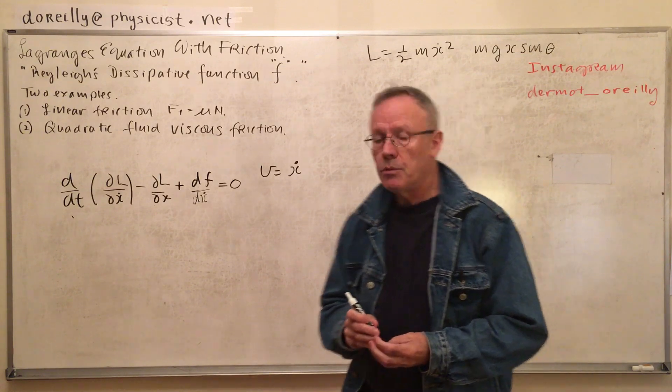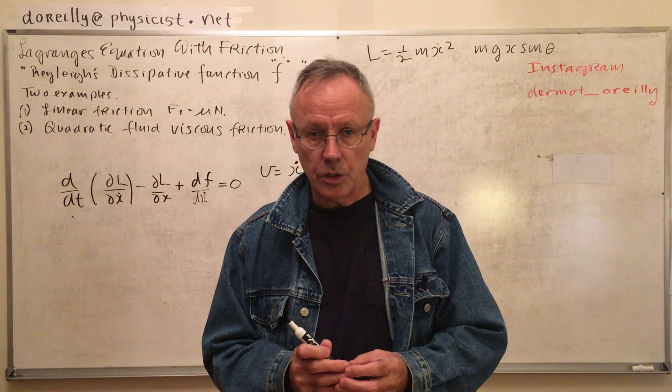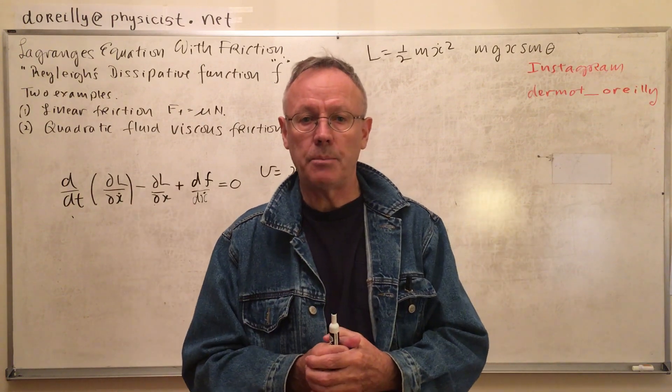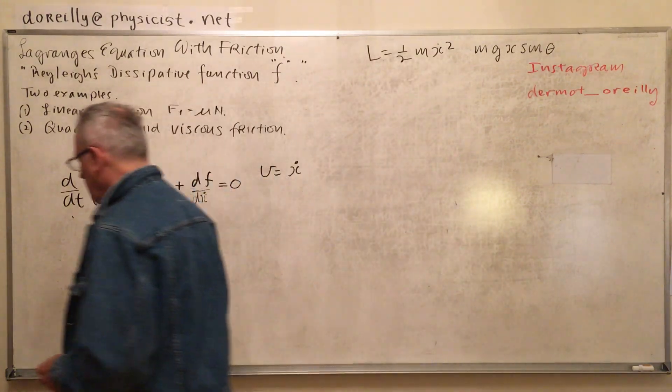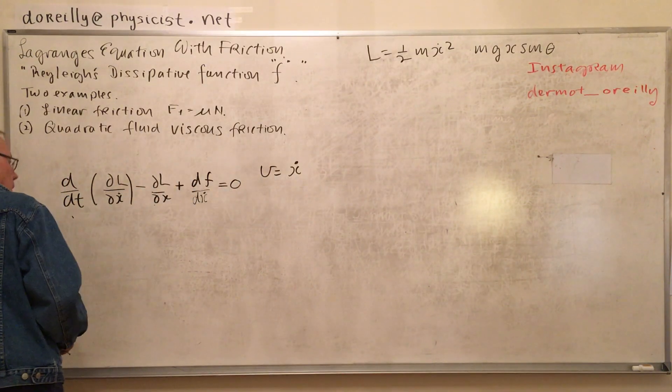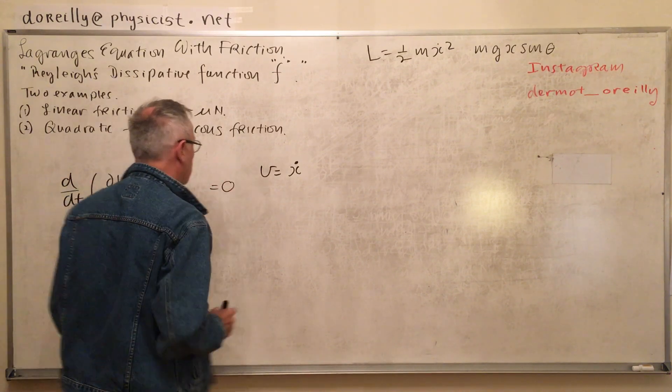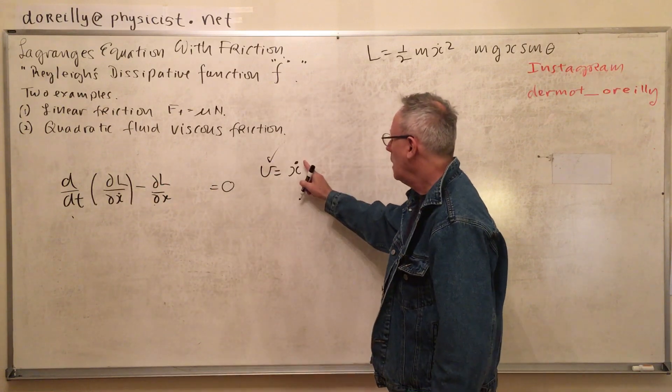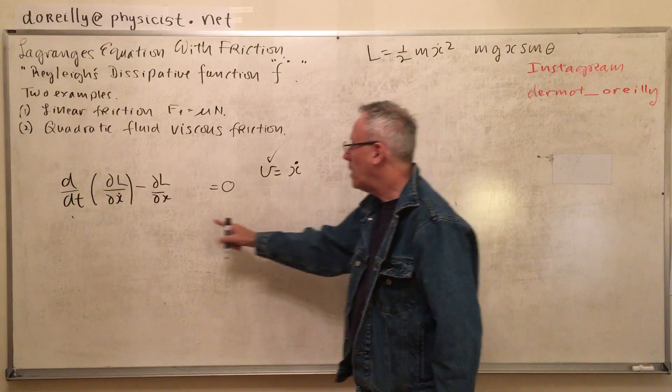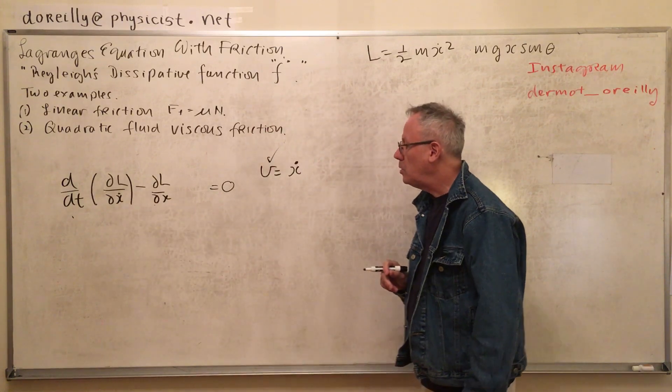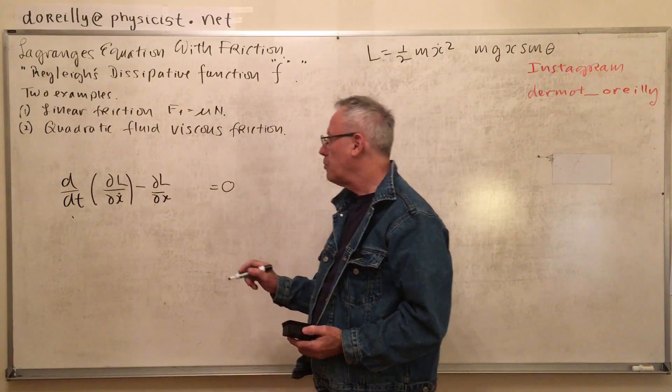I promised that I would show you how to deal with Lagrange's equation when we include a dissipation force. Let's first look at Lagrange's equation. Don't forget the velocities are the derivatives with respect to time of the generalized coordinates. Very often people do not use generalized coordinates with a Q, I just stuck in an X.